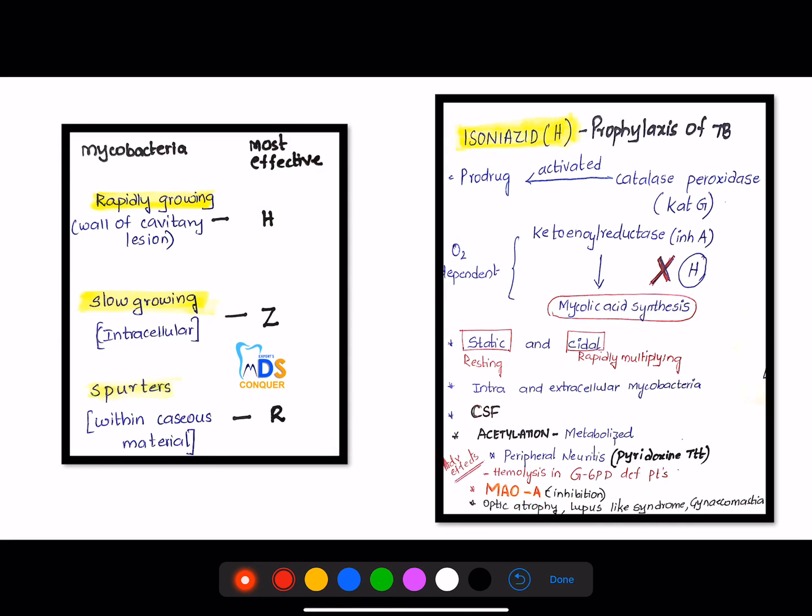These are the drugs which are most effective in mycobacteria. Rapidly growing mycobacteria, isoniazid is very effective. In slow-growing mycobacteria, pyrazinamide is more effective. And in spurters like within caseous material, rifampicin is more effective.